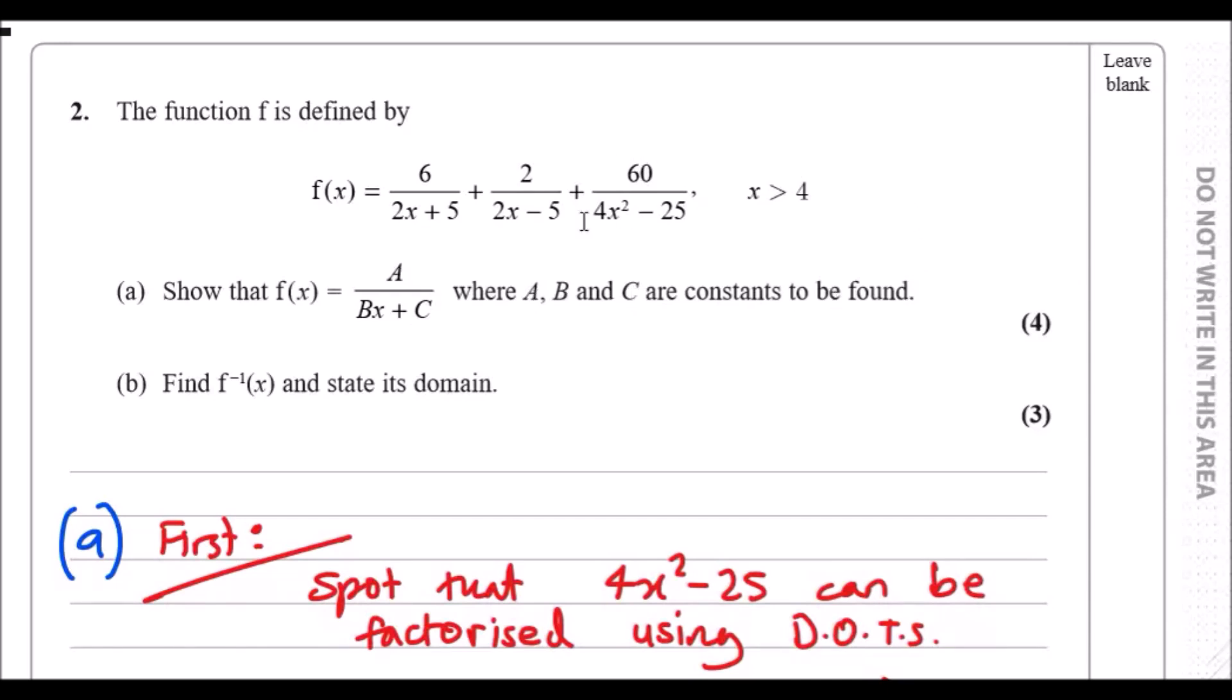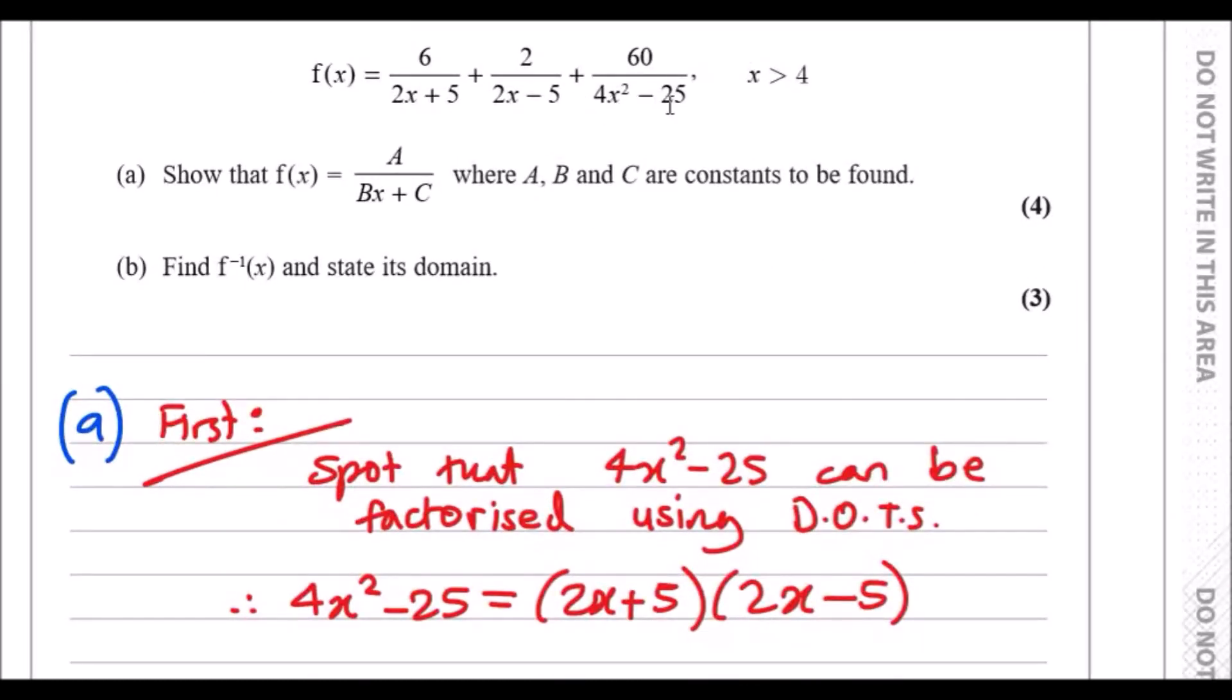Now if you guys haven't already spotted this, I want you to have a look at the last term, the 4x squared minus 25. This thing you have to immediately spot and realize that this can be factorized using difference of two squares.